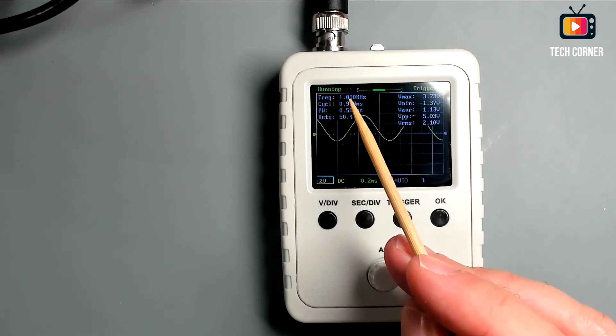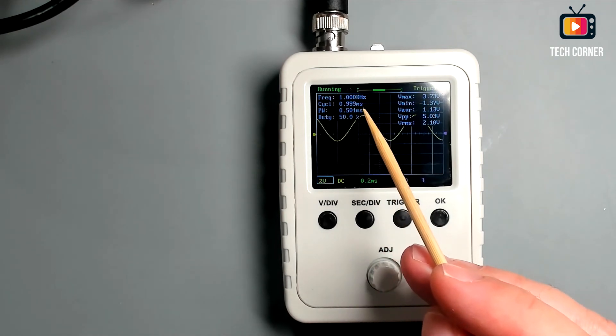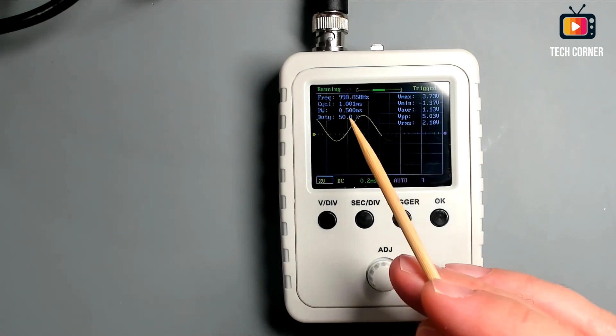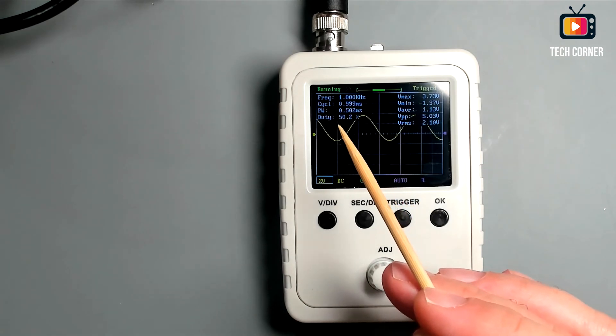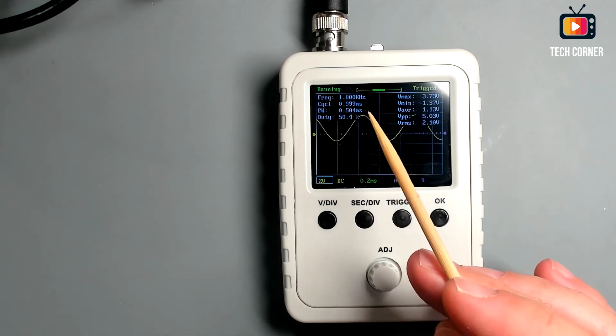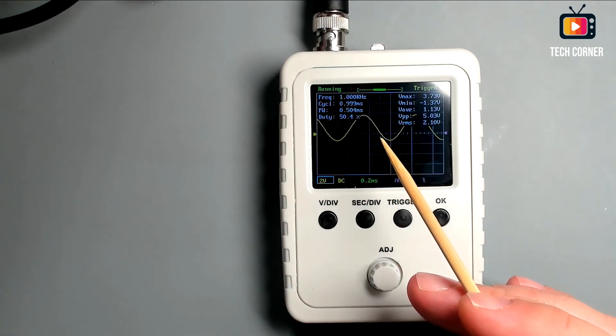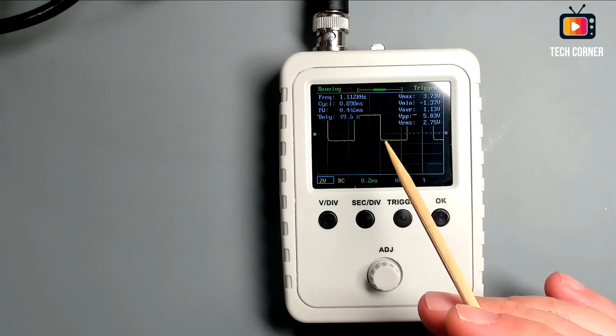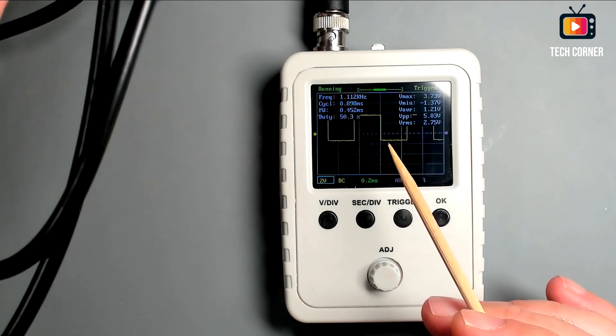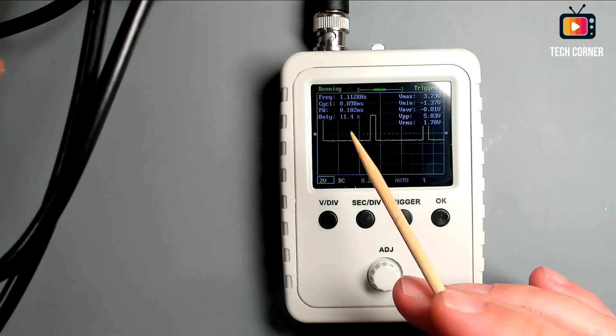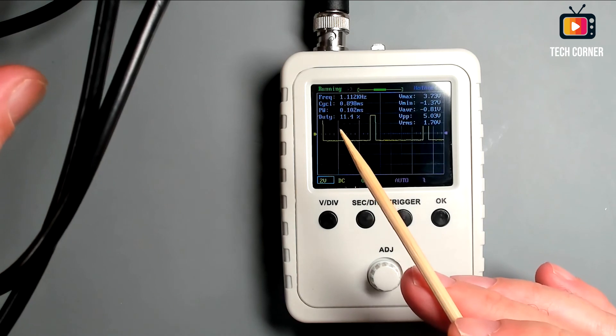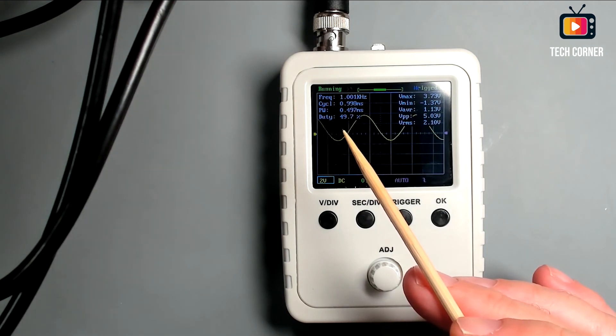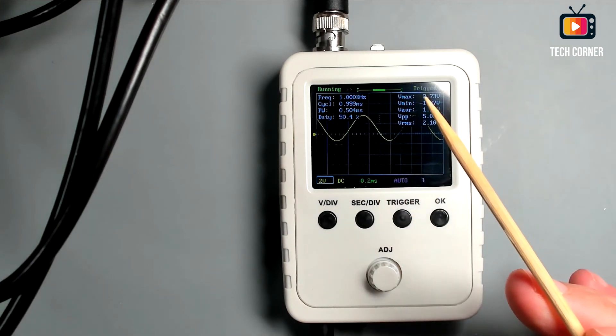In terms of metrics, we have here the frequency, the cycle time in this case is 0.999 milliseconds, the pulse width and the duty cycle. Regarding the duty cycle, it's the time that the signal is on in the cycle. Let's try to see this on the square wave where we can see where the signal is on and where is off.